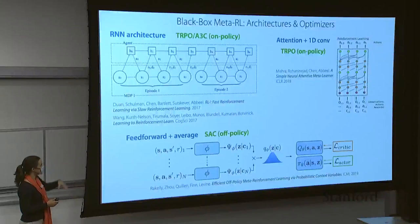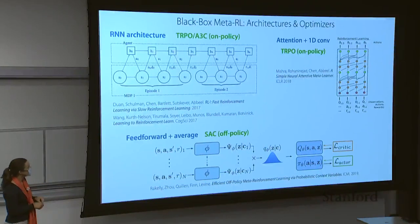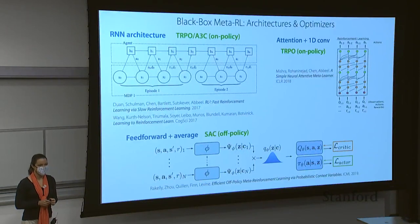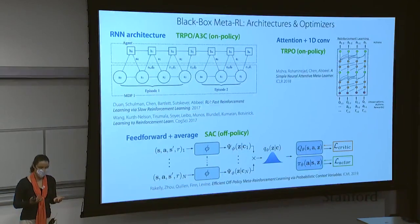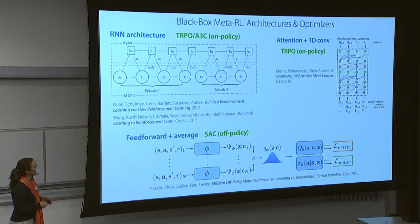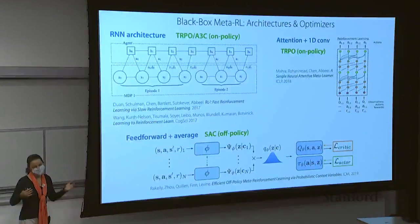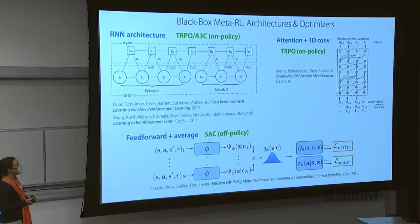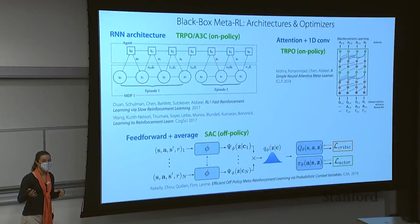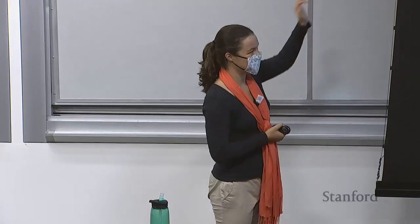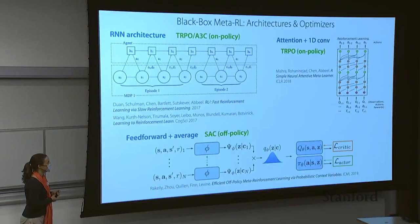On why multiple early papers used TRPO: policy gradients are simple to implement and easier to get working when given enough data. The first black box meta-RL methods often went with simpler approaches. That said, on-policy methods like policy gradients are very data inefficient during meta-training — they're extremely data-hungry. This is a reason to favor value-based methods; off-policy methods during meta-training are much more sample-efficient.